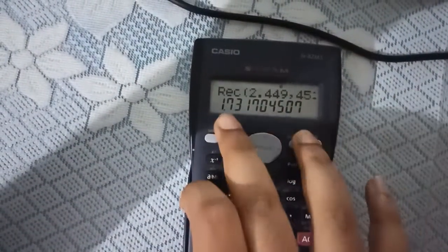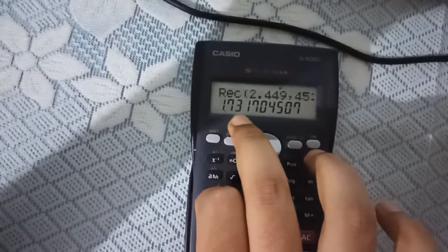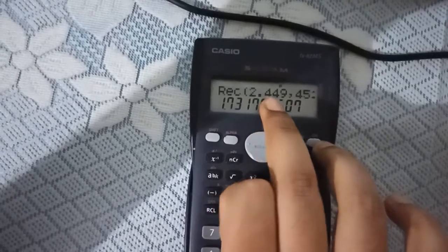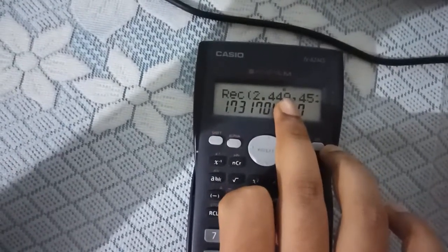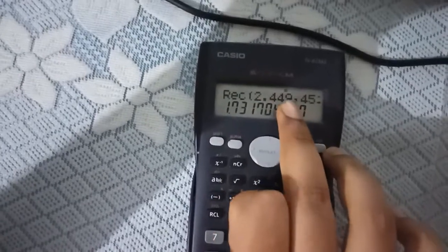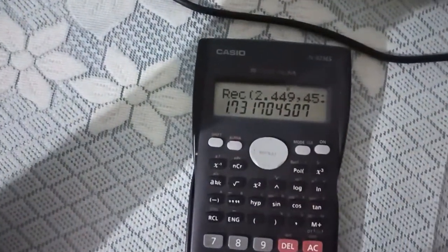We are very close to root 3. That is 1.732 is the value of root 3. And it is coming as 1.73170 because we have given the value of 2.449. If we would have given the exact figure which appeared in the previous part of the video, that is 2.449 and the stuff which were going on, then it would have given the exact value of root 3.